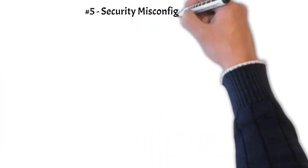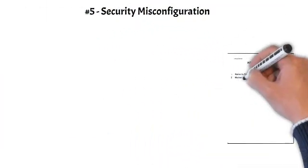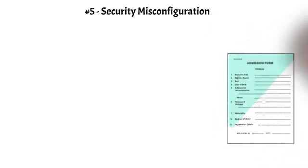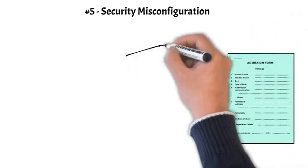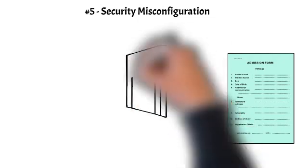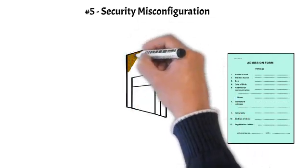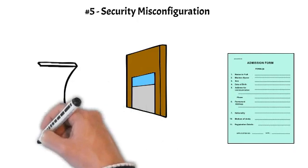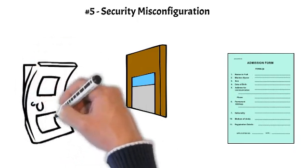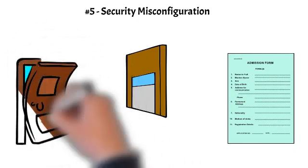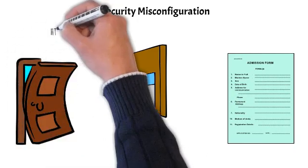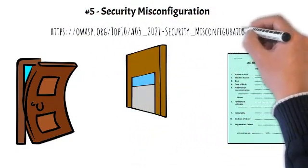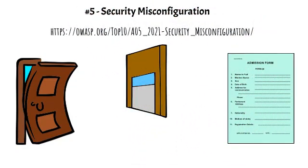Number 5: Security Misconfiguration. Moves up from number 6 in the previous edition; 90% of applications were tested for some form of misconfiguration. With more shifts into highly configurable software, it's not surprising to see this category move up. The former category for XML External Entities (XXE) is now part of this category.